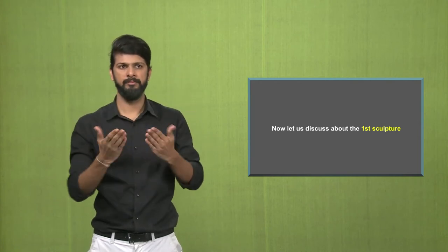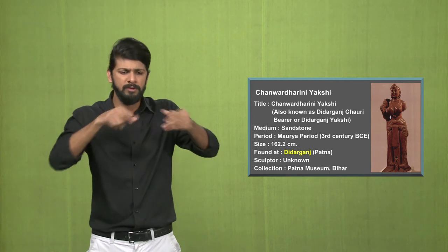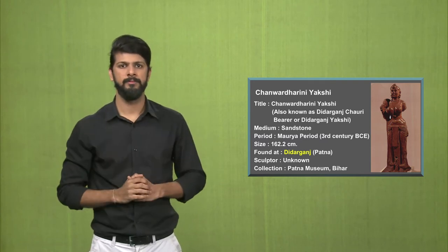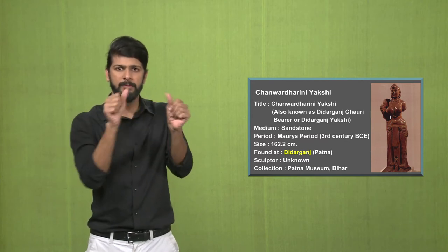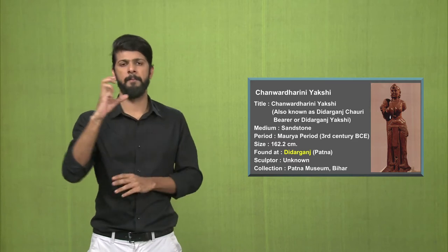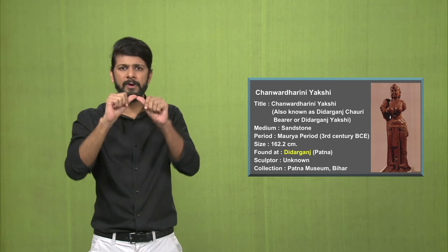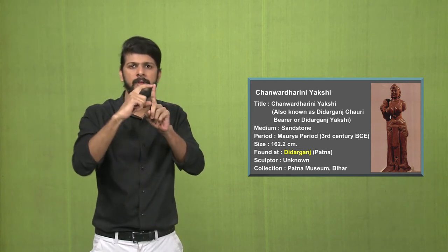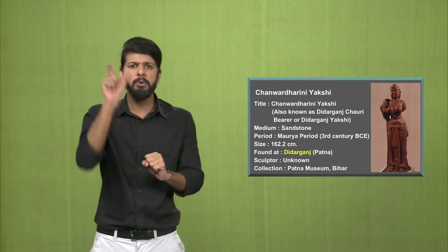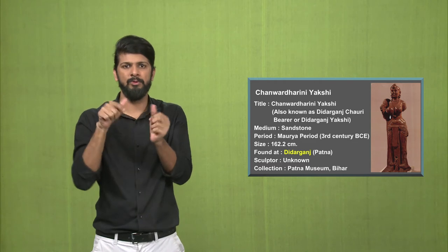Now let us discuss the first sculpture. The first sculpture is the Chanvar Dharini Yakshi. The medium is sandstone. The period is the Maurya period, somewhere in the third century BC. The size of this sculpture is 162.2 centimeters. It was found at a place called Didar Ganj, near Patna. The sculptor is unknown and this sculpture is currently exhibited at the Patna Museum in Bihar.